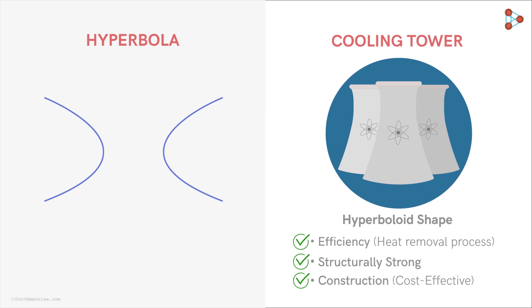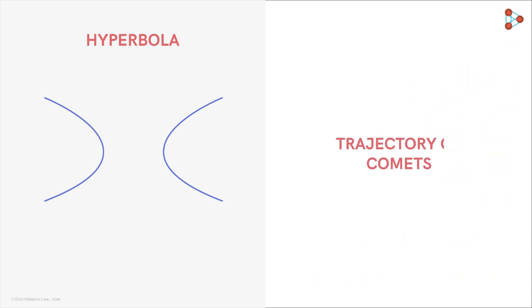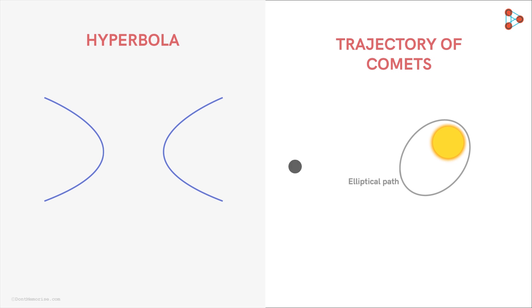Another area where the hyperbolic shape occurs is the trajectory of comets. Some comets in our solar system follow an elliptical orbit around the Sun and are permanently part of our solar system. But a comet traveling at a very high velocity such that it can escape the Sun's gravitational pull follows a hyperbolic trajectory around the Sun. Such comets pass through our solar system only once.